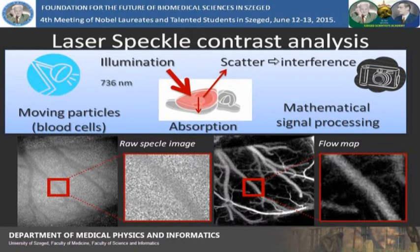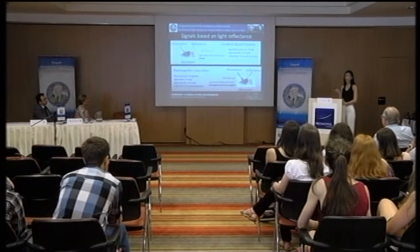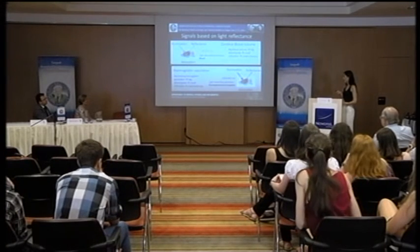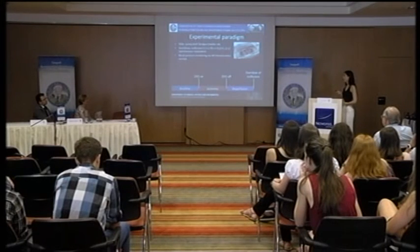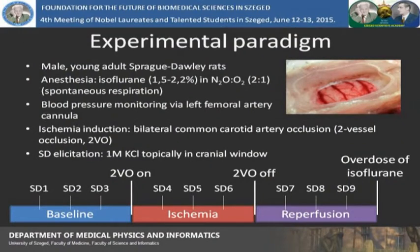Cerebral blood volume can be measured by its absorbance of green light — if there is a large amount of blood in the brain, it absorbs more light and causes a smaller reflection. With red light, we can measure how much oxygen the blood delivers to the brain, because oxygenated hemoglobin absorbs more light, causing smaller reflection and smaller intensity in the pictures. Our experiments were performed on male young adult Sprague-Dawley rats under anesthesia with isoflurane. Their blood pressure was monitored during the procedure with a cannula in the left femoral artery.